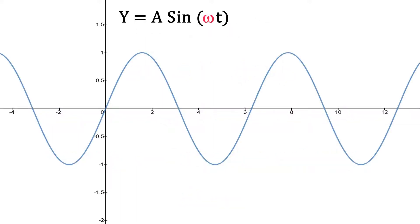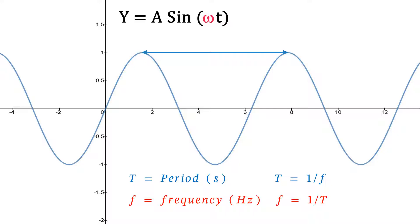We have y equals a sine omega t, the general equation for a sine wave, where a is the amplitude and omega t is an angle. The period is the amount of time for one cycle or one waveform, and it's equal to one divided by the frequency and vice versa.